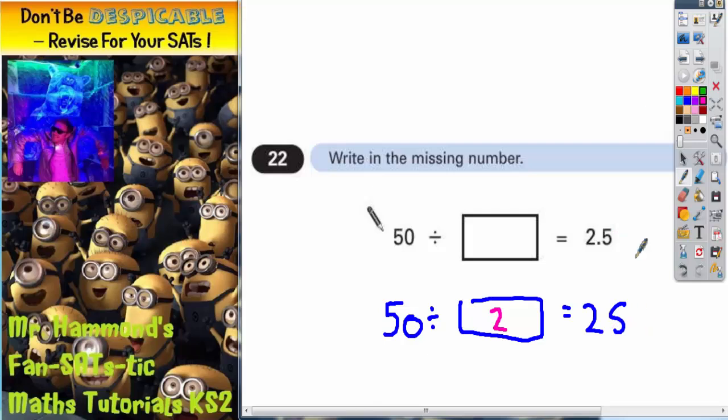However, the answer that we're actually looking for is 2.5, and that is 10 times smaller than 25.